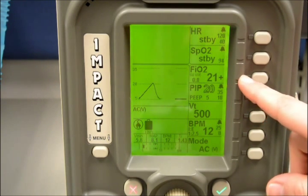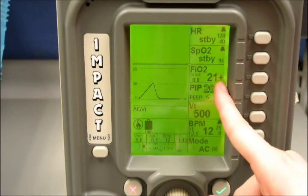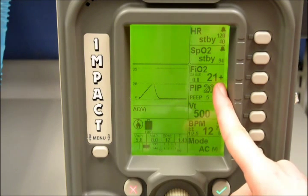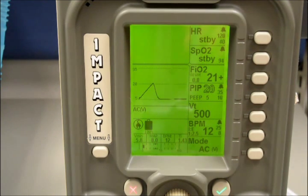As a visual reference to know that you are on low flow, there is a positive sign right next to the FIO2. And that is how you set up low flow.